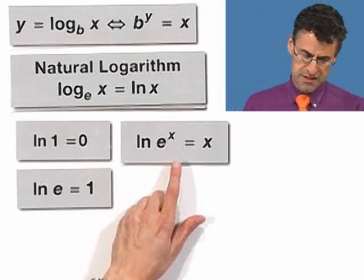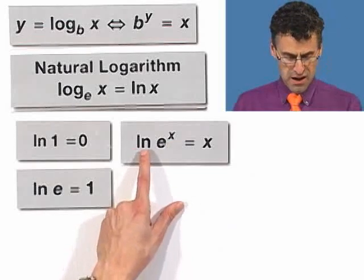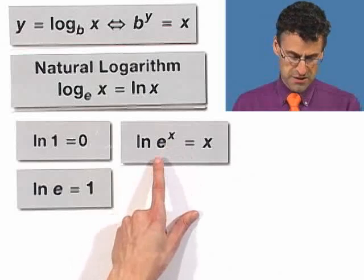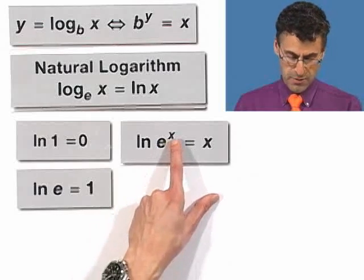Natural log of e to the x equals x. And that's the exact same property that we saw earlier. This is log base e of e to the x. So it's e to what power will equal e to the x? Well, the power has to be x.